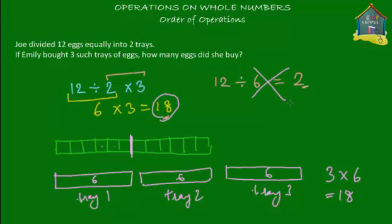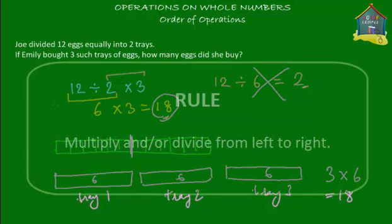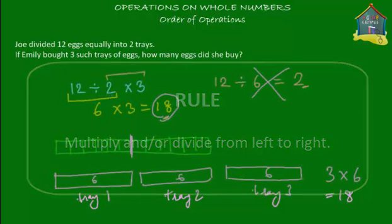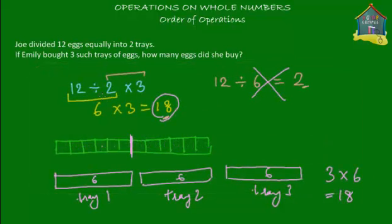So what's the rule? Do all the divisions and multiplications starting from the left and moving to the right. The first rule is do all the additions and subtractions from left to right, and the second rule is do all the multiplications and divisions from left to right.